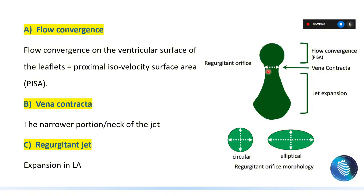The jet passes through the regurgitant orifice and we get a narrower neck. This neck, which is the narrowest part of the jet, is called the vena contracta — the part at which the flow contracts and passes through the regurgitant orifice. Lastly, when the jet reaches the left atrium it will expand again in a larger space, giving us the body of the jet, called the jet expansion.